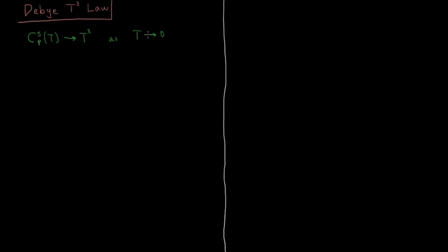Remember that we can't get exactly to absolute zero, usually except for thought experiments, but we can get arbitrarily close to it. So the limit as T goes to zero of Cp of a solid equals zero, because if the heat capacity approaches T cubed and T cubed goes to zero, the Debye T cubed law implies that the heat capacity of a solid will go to zero as the temperature goes to zero.